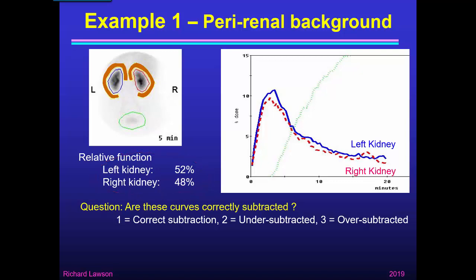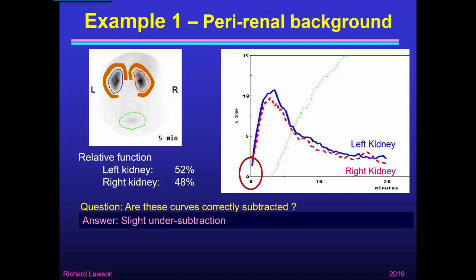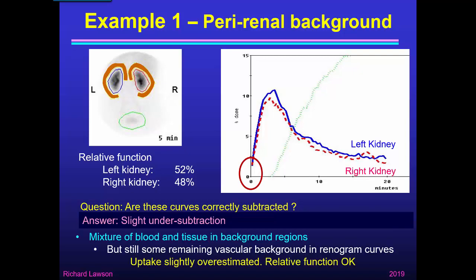I think there's still slight undersubtraction. You can see that neither curve starts exactly from zero, but they're not far off. We've chosen a background region which has a mixture of blood and tissue, but there's still some remaining vascular background in the renogram curves. So although the uptake has been slightly overestimated, because it's the same for both kidneys, the relative function is probably still okay.